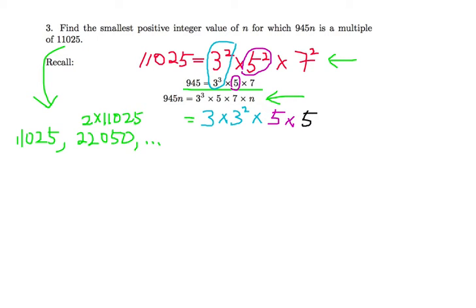And then the next one is 7 squared and 7. So you can see that 945 is lacking a 7. So we need to add a 7 here.